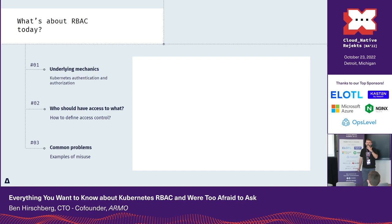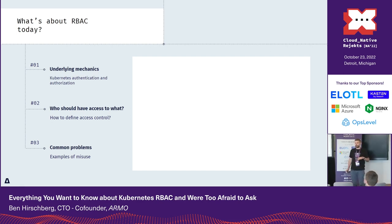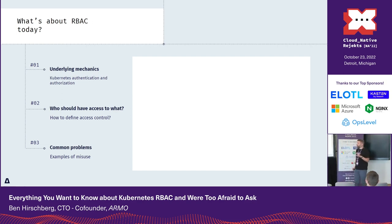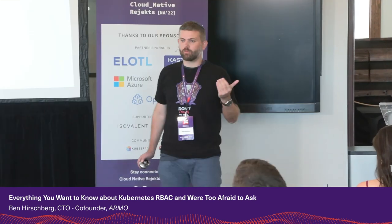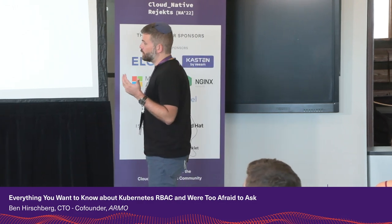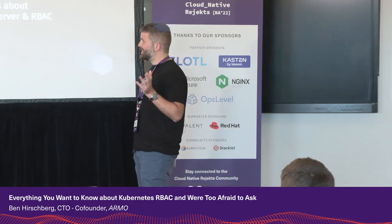We're going to do a 101 on Kubernetes RBAC with a few very specific examples. Then we'll do 102, which is more about how we are writing Kubernetes RBAC when we need to maintain it. And then I will bring you a few issues we are seeing in live Kubernetes clusters around RBACs. So let's go in.